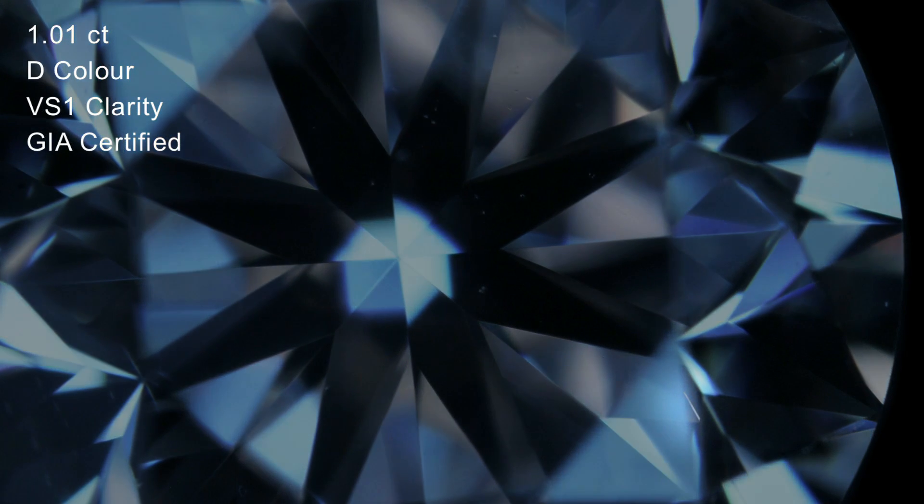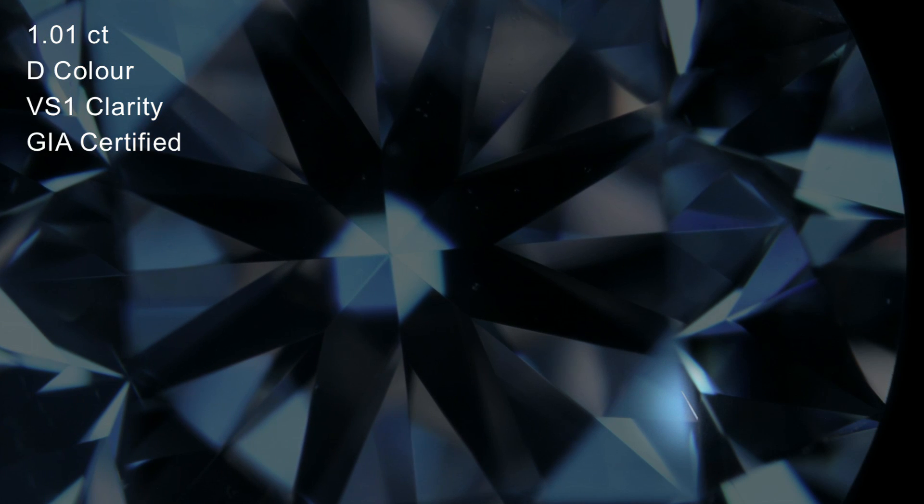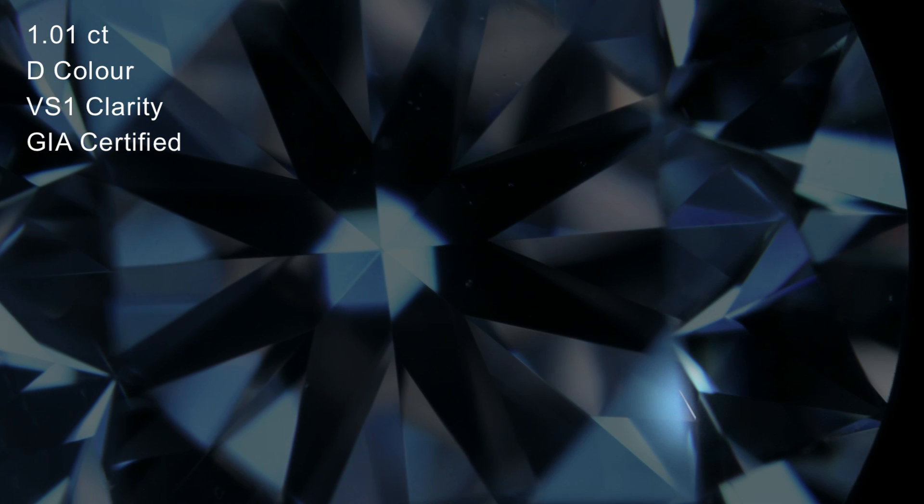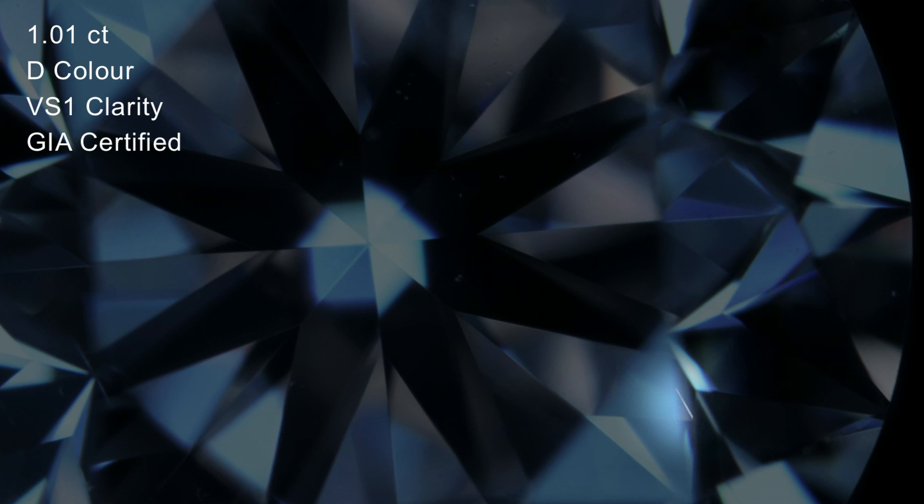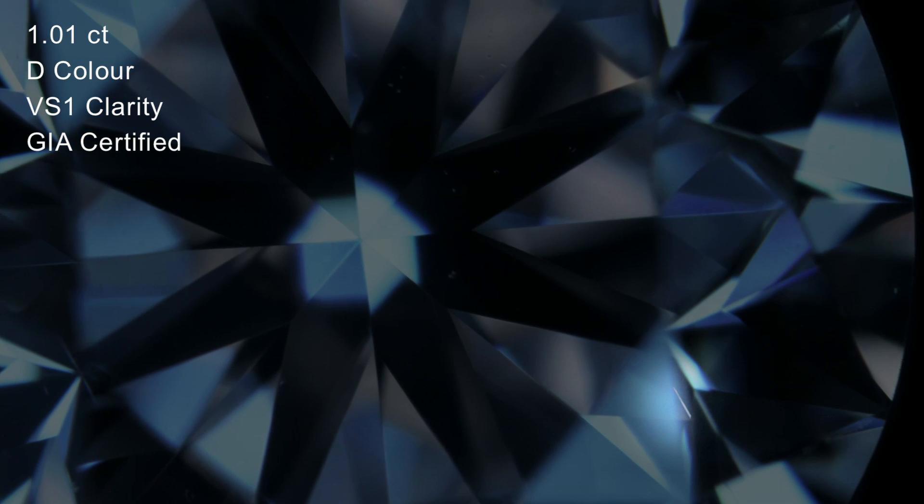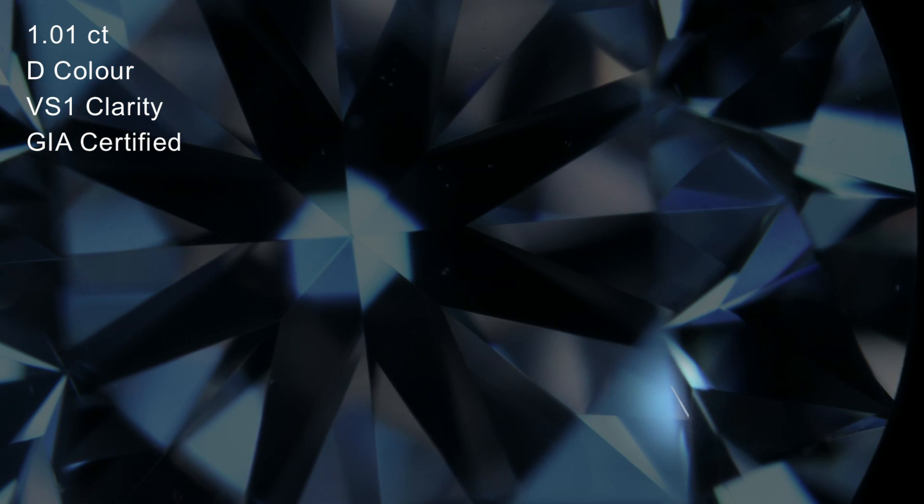Next is a needle inclusion. This is similar to the crystal inclusion, but as the name suggests, it's needle-like in shape. This type of inclusion is often white, and it's actually very rarely visible to the naked eye.